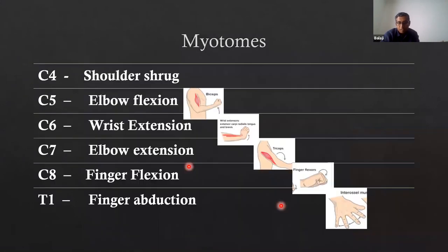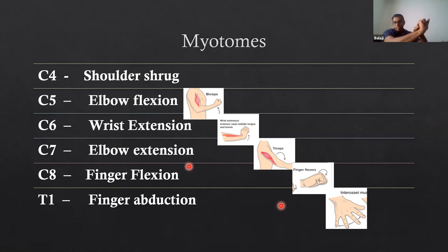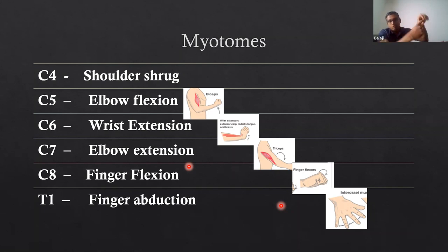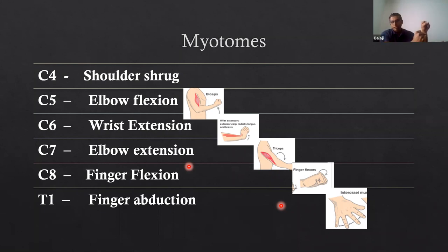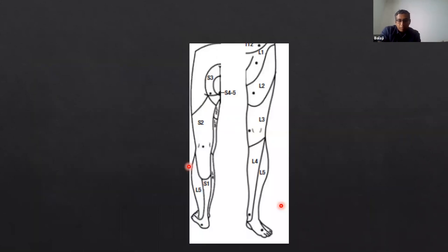The myotomes are the muscles you'll test. Shoulder shrug tests C4. Elbow flexion tests C5. Wrist extension tests C6. Elbow extension tests C7. Finger flexion tests C8. Finger abduction tests T1. Just remember: shoulder shrug, elbow flexion, wrist extension, elbow extension, finger flexion, and finger abduction. For the lower limb sensory dermatomes: L1 is the inguinal ligament area; L2 is medial thigh; L3 is medial knee; L4 is medial malleolus; L5 is the first web space; and S1 is the lateral aspect of the ankle.